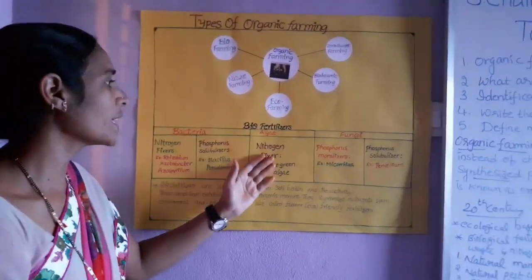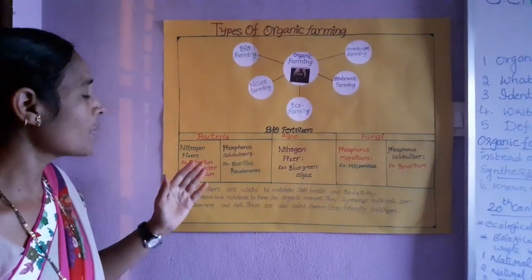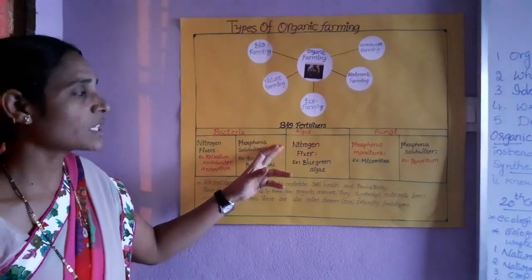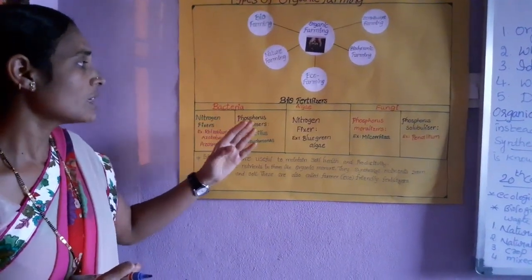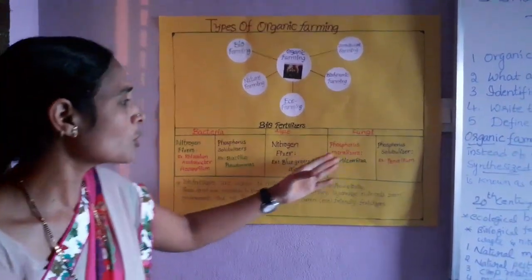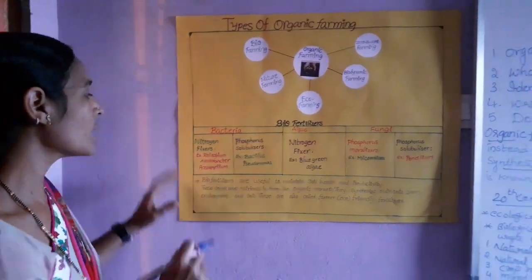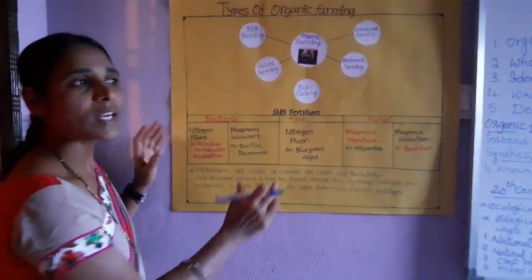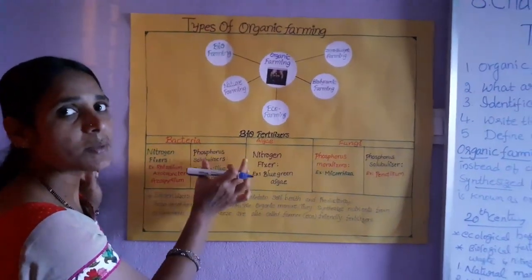From algae, under nitrogen fixers, the example is blue-green algae. From fungi, we get phosphorus mobilizers and phosphorus solubilizers — Mycorrhizae for mobilizers and Penicillium for solubilizers. So in this flow chart, bacteria, algae, and fungi all convert into bio-fertilizers. The major nutrients from bio-fertilizers are nitrogen and phosphorus.